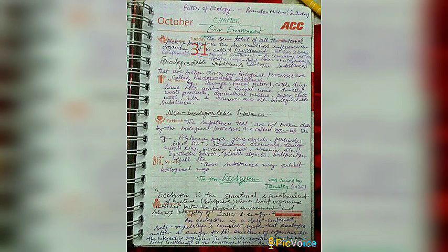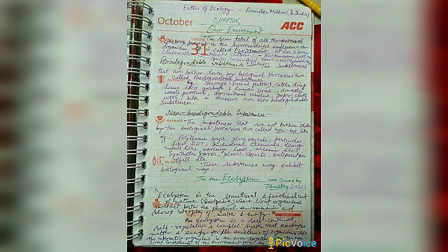Today's chapter is 'Our Environment'. Environment is the sum total of all the external factors present in the surroundings that influence organisms. It has two basic components: abiotic and biotic. Abiotic components include air related to atmosphere, soil related to lithosphere, and water related to hydrosphere, as well as non-living factors like temperature, sun rays, and humidity.